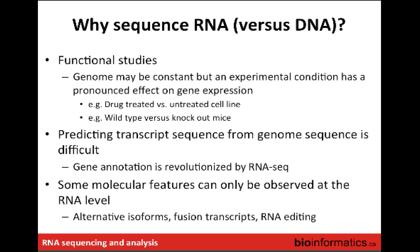With RNA-seq, we can now shotgun-sequence vast amounts of transcriptome data, align it against a reference genome, and let the data tell us what the exon-intron structure is, where transcription is happening, in what conditions, and at what levels of abundance. This has largely made purely predictive computational gene finding approaches irrelevant.